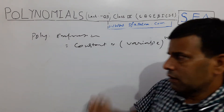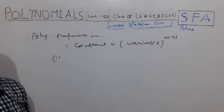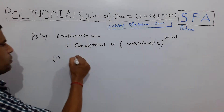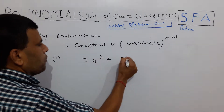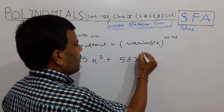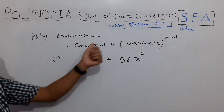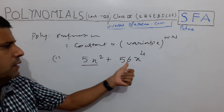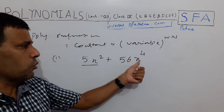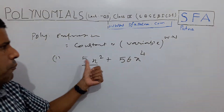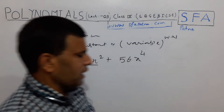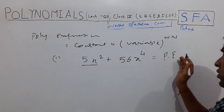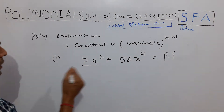First, if we add two or more polynomial expressions — there is no restriction, you can take 2, 3, 4, 5 or as many terms as you like — the result is still a polynomial. For example, 5x² + 56x⁴: here 5 is constant, x² has power 2 which is a whole number, so it is a polynomial. Similarly, 56 is constant, x⁴ has power 4 which is a whole number. Both terms are polynomial expressions, and adding them also gives a polynomial expression. Similarly, subtraction also gives a polynomial expression.